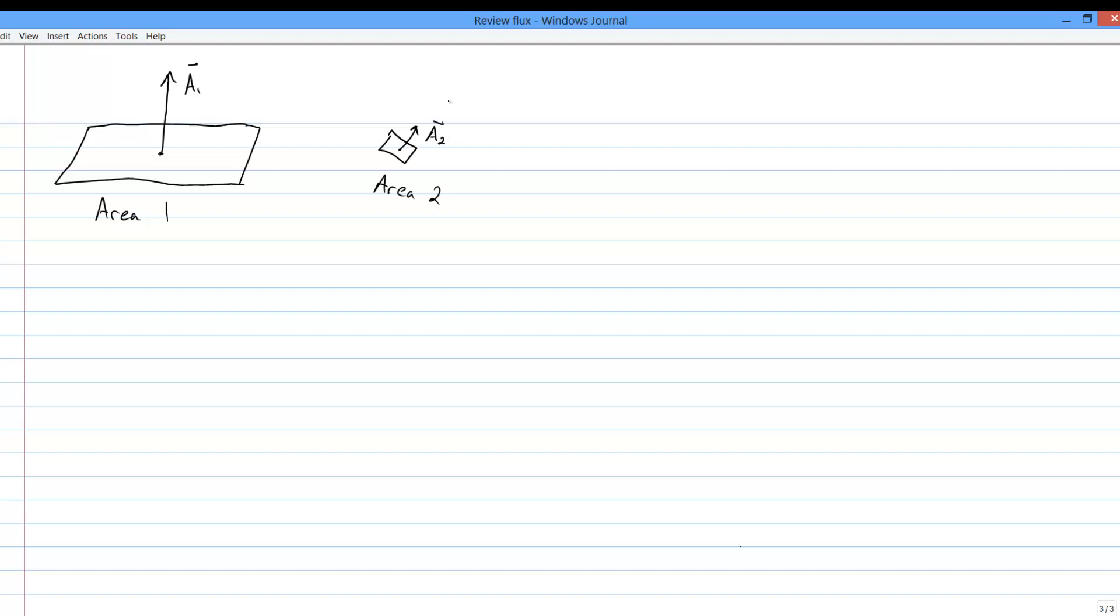The area vector for a particular surface has length equal to the numerical area of the surface and points perpendicular to the surface, also known as normal to the surface.